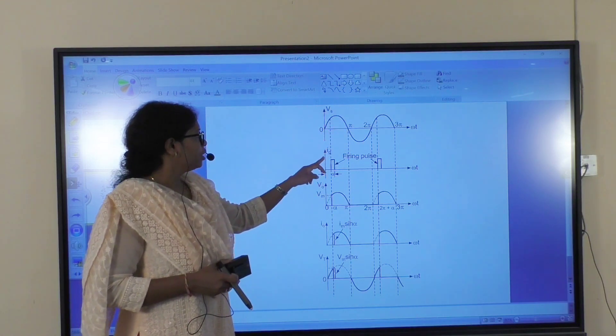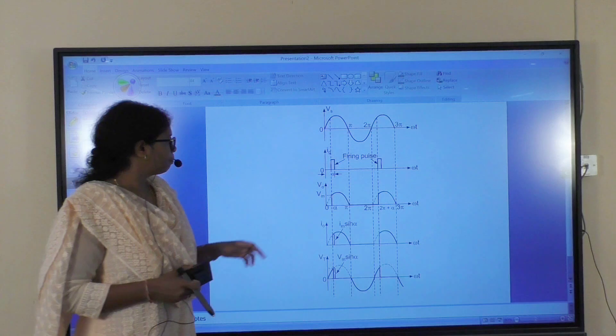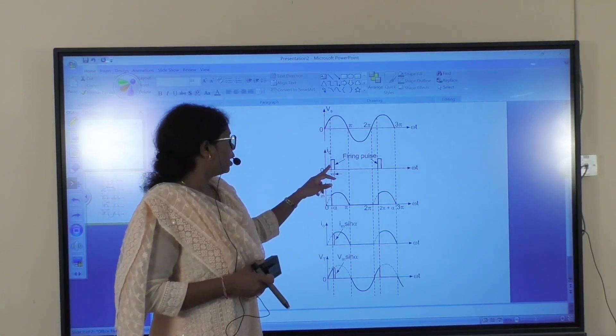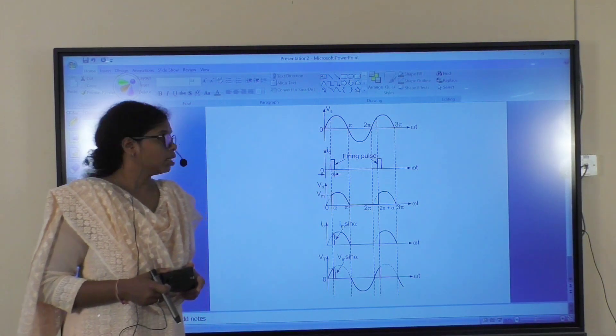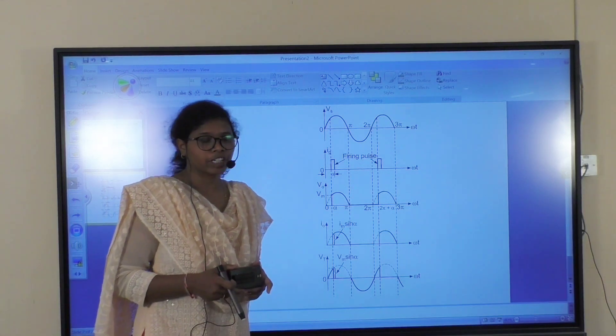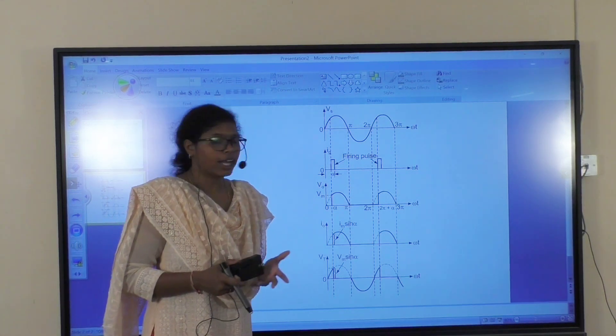And this is IG, the gate current or gate pulse. We are using the gate current for the purpose of triggering the thyristor.